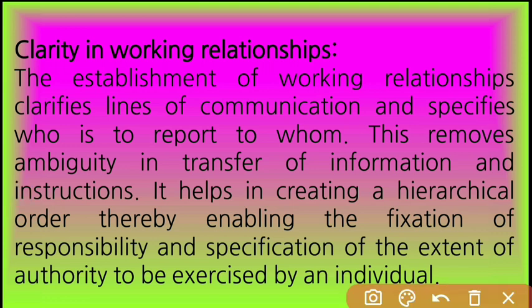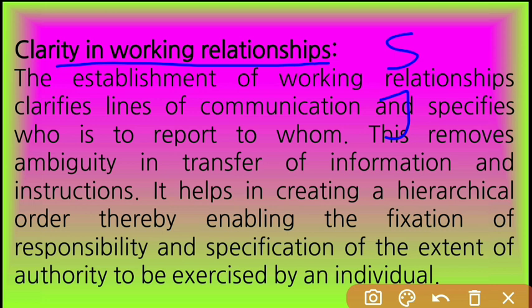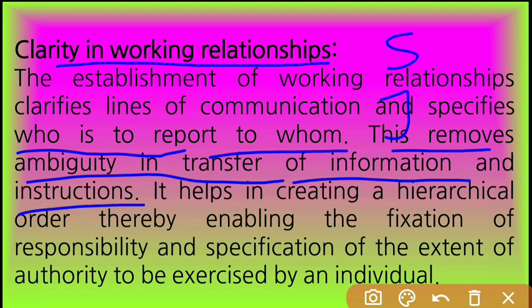Next, clarity in working relationship. The second importance an organization gets from the organizing function is clarity in working relationship. Workers have no doubts in their minds, because they clearly know what work they have to perform, what is their authority and what is their responsibility. Senior and junior relationships are clearly defined, so workers know who is to report to whom — who to take orders from, who to give instructions to. It removes the ambiguity in the transfer of information and instructions, because everyone knows who is their boss and who is their subordinate.